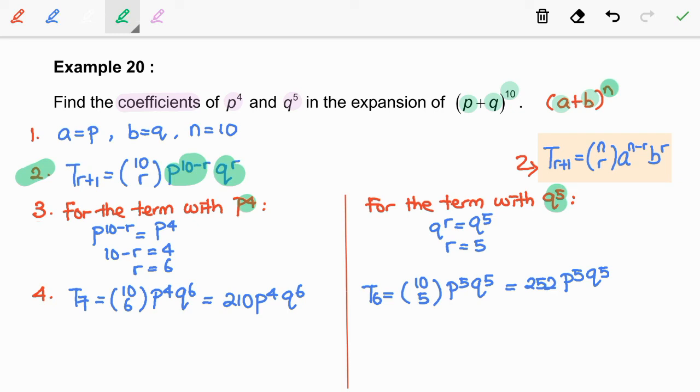Here, we clearly see that the coefficient of p^4 is 210 q^6, and the coefficient of q^5 is 252 p^5.